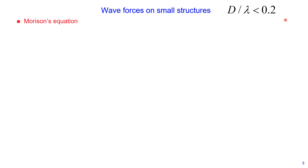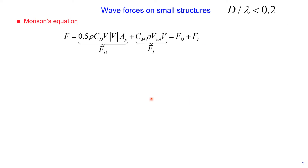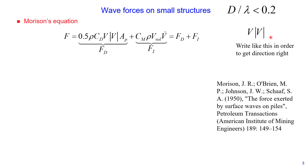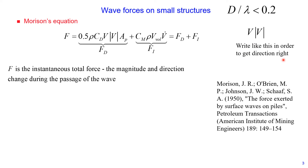In this case, we use Morrison's equation. According to Morrison's equation, the total wave-induced force acting on a small structure is equal to drag force plus inertia force. This equation was proposed by Morrison and his co-authors in 1950, and you can find the article using the reference provided on this slide. F is the total instantaneous force, accounting for magnitude and direction, which changes during the passage of the wave.